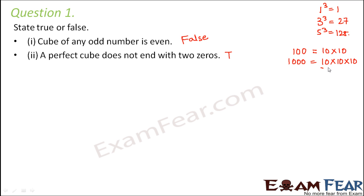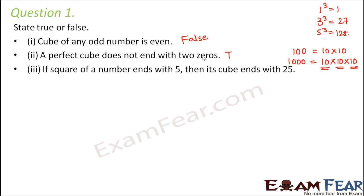This is true because you need the same number of zeros divided into three equal groups. Question: if a square of a number ends with 5, then its cube ends with 25. Any number ending with 5 — its square ends with 5 again, and its cube also ends with 5, but saying the cube ends with 25 is not necessarily true. This is a false statement.